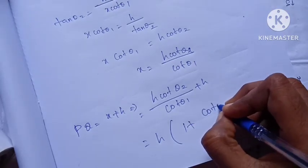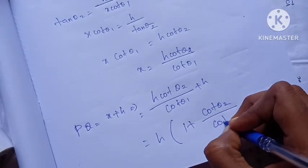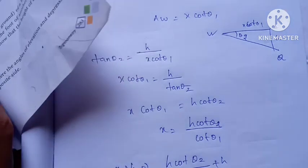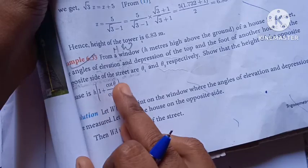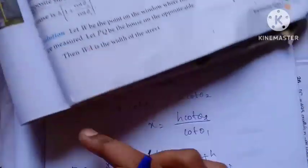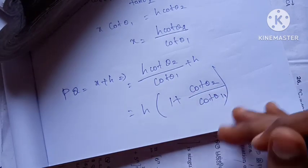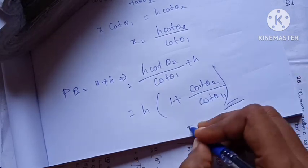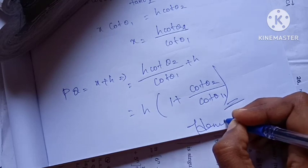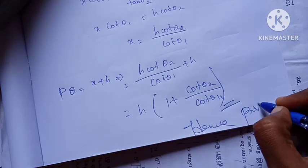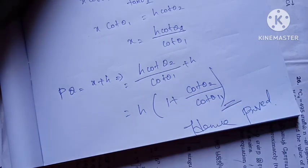So 1 plus cot theta2 by cot theta1 — so 1 plus cos theta2 by cos theta1, and we will prove it. So this is the opposite house, this is the question. Thank you.